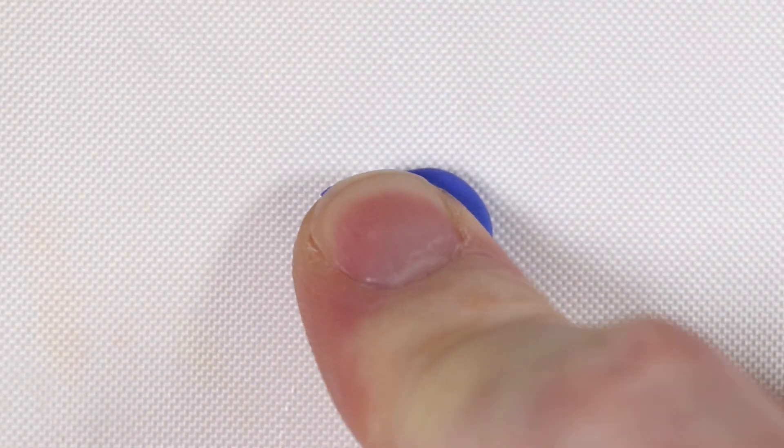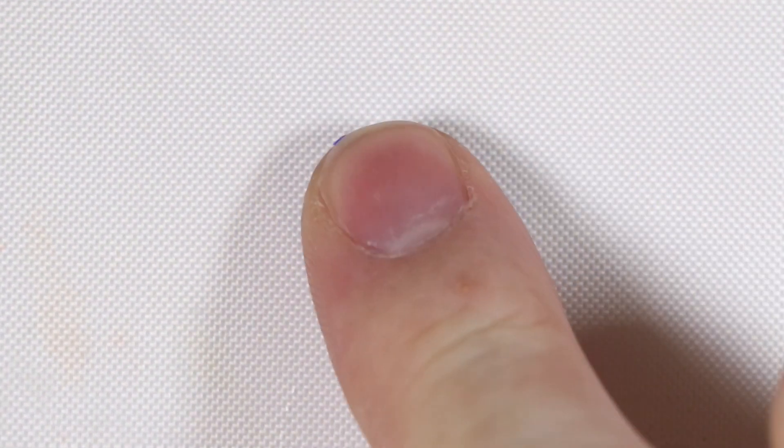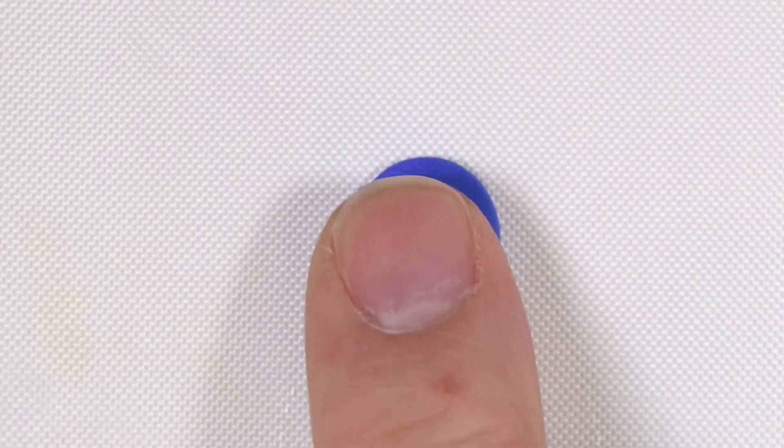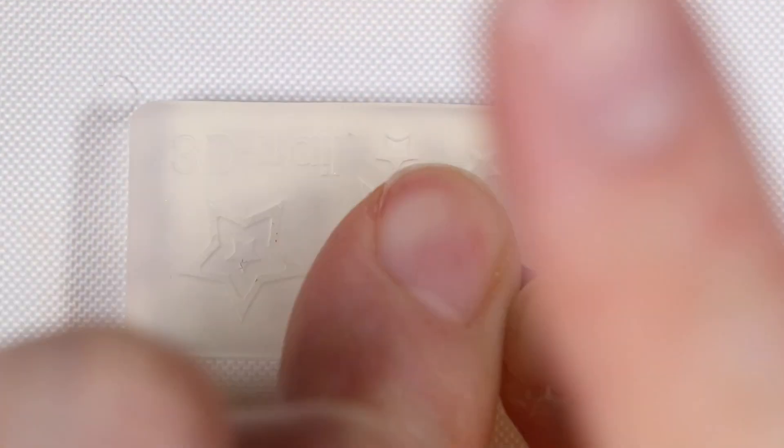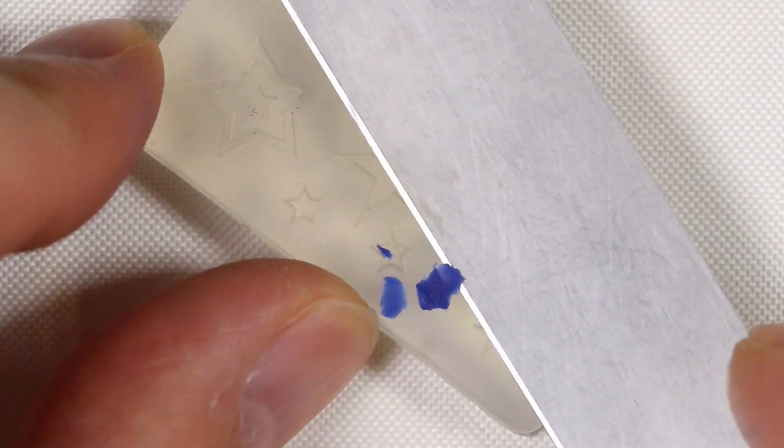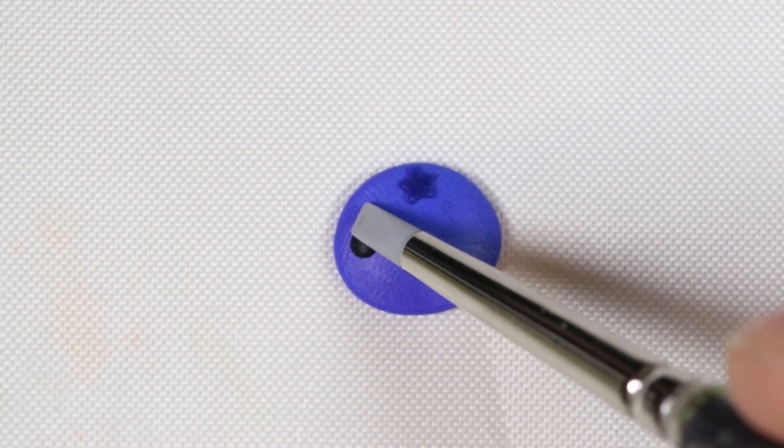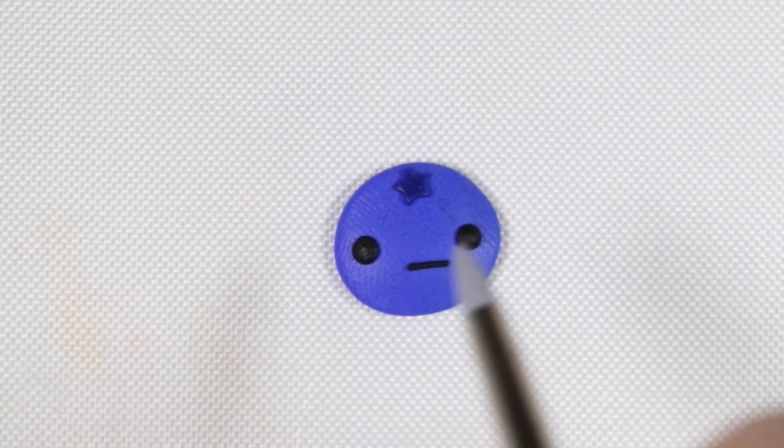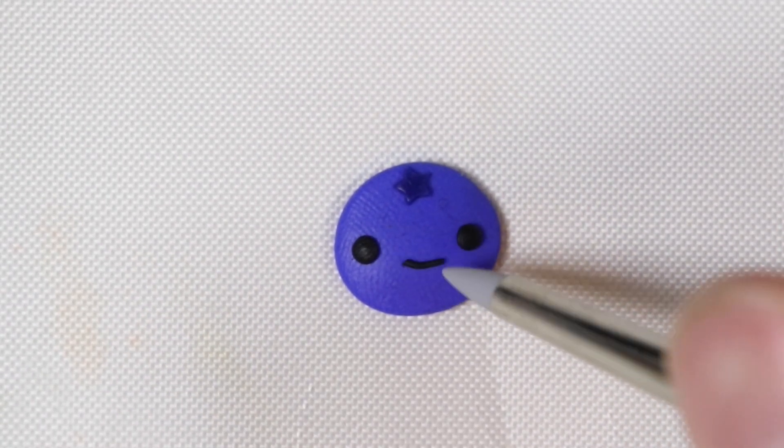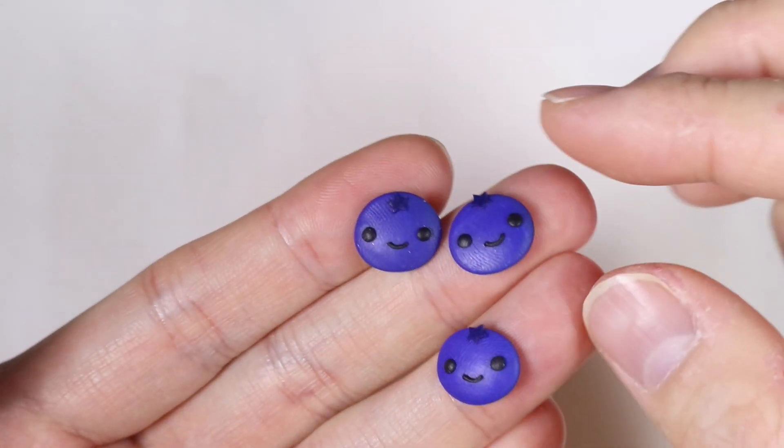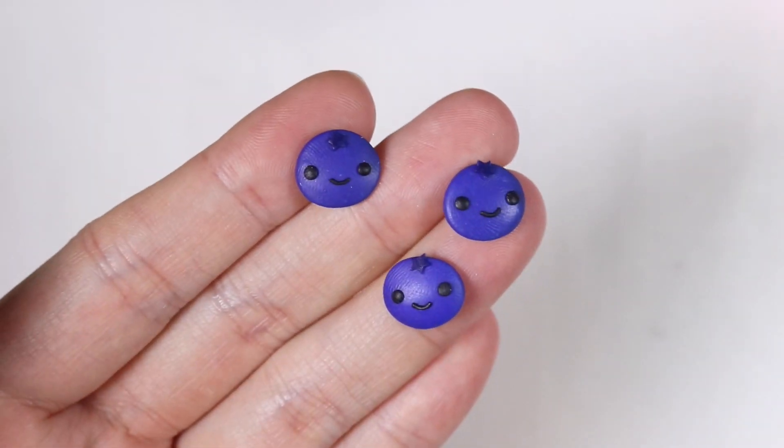So next we're going to make the blueberries out of clay. So I took some blue clay and flattened it out into a circle shape. And using a star mold, I'm putting in a little dark blue piece of clay to make a dark blue star. And this will be like the part of the blueberry. So I put that on top and I added some dot eyes and a line smile. And I made three of them so we can have three little blueberries in our jar.